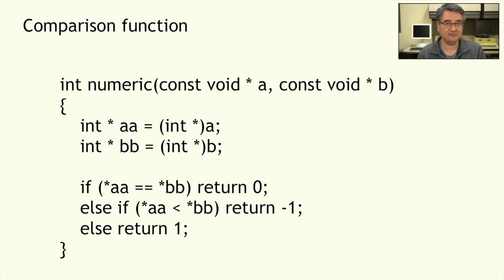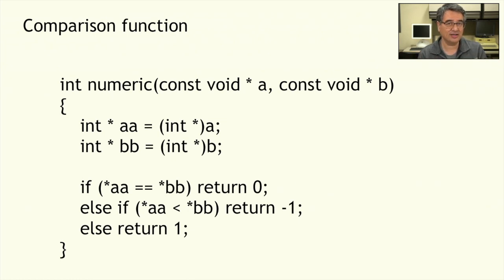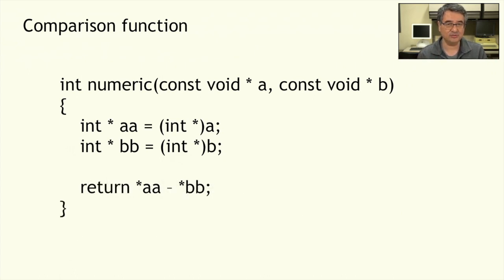That's the comparison function, but I can actually shorten it a little bit. Since these are numbers, I can just subtract the two values. If they're equal, the difference will be 0, and if they're not equal, I'll get either a positive number or a negative number depending upon which is less or greater. So just return what A is pointing to minus what B is pointing to. That's a lot simpler, and it accomplishes the same thing.